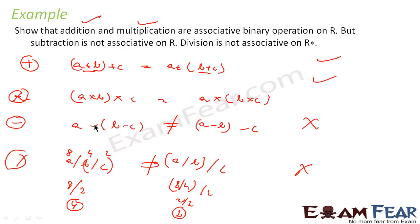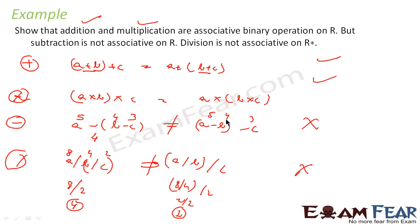Similarly for subtraction, take A=5, B=4, C=3. Then (5−4)−3 = 1−3 = −2, but 5−(4−3) = 5−1 = 4. You can see they are not the same, confirming subtraction is not associative.